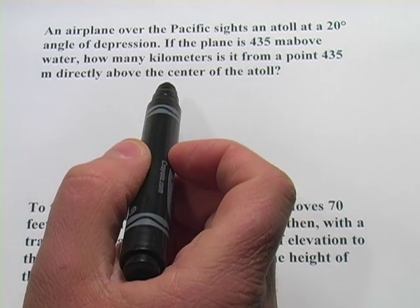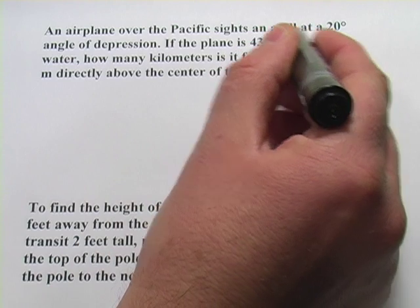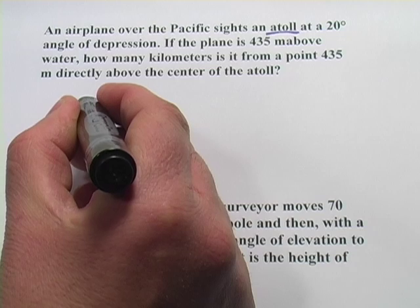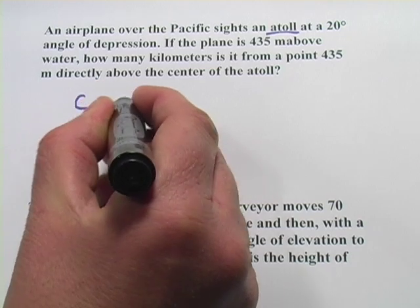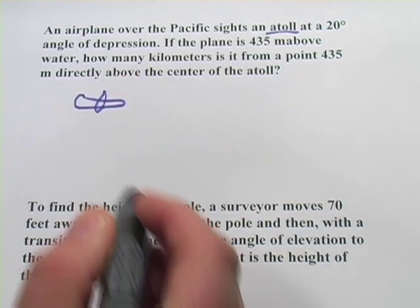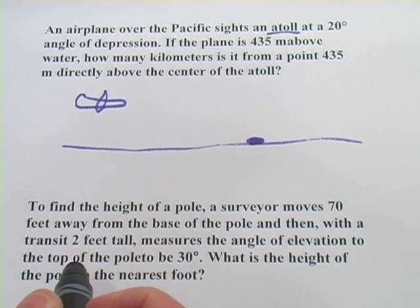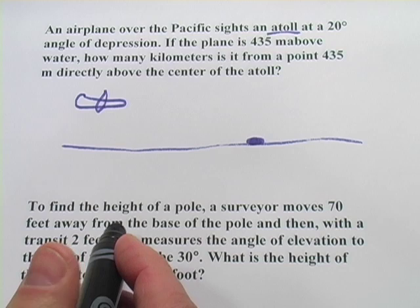So an airplane over the Pacific sights an atoll. An atoll is just a little coral island that forms on the surface of the ocean. So let's just draw a little picture. We've got our plane here, and it's flying over the ocean. And there's a coral atoll here. And it sights it at a 20-degree angle of depression.